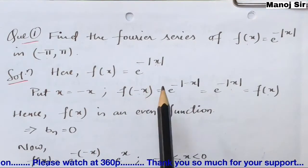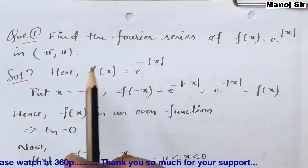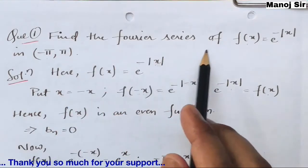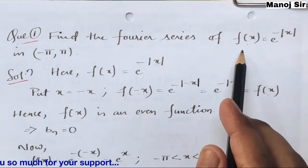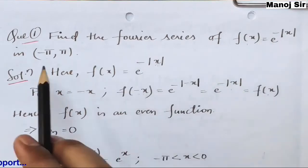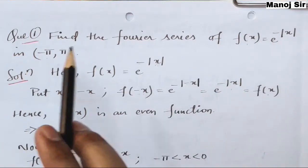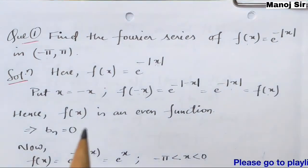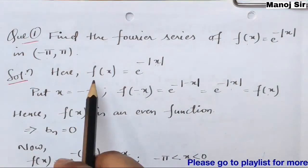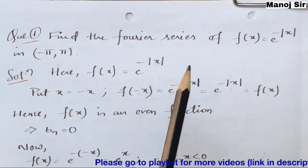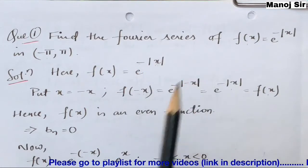Let us start solving this problem: find the Fourier series of the function f(x) = e^(−|x|) in the interval minus pi to plus pi. Here the function is e to the power minus mod of x.